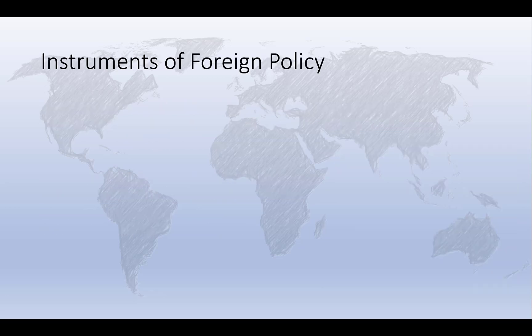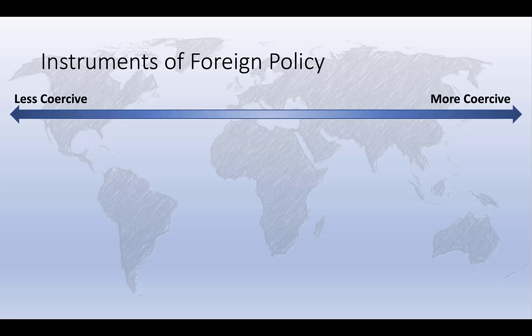But what tools are available for states to achieve these foreign policy goals, whatever those goals might be? Broadly speaking, we can identify three sets of tools or policy options available for decision makers in the arena of foreign policy. Most specific actions will fall into one of these groups, and we can place these actions along a spectrum of violence or coerciveness.